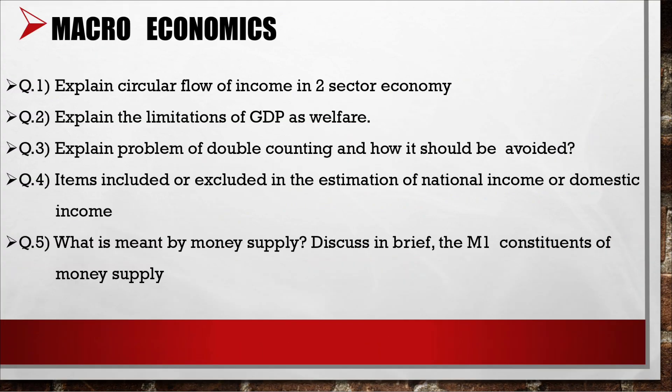From macroeconomics: 1. Explain circular flow of income in a two-sector economy. 2. Explain the limitation of GDP as a measure of welfare. 3. Explain the problem of double counting and how it should be avoided. 4. Items included or excluded in the estimation of national income or domestic income. 5. What is meant by money supply? Discuss in brief the M1 constituent of money supply.